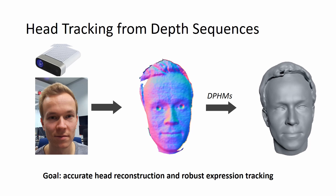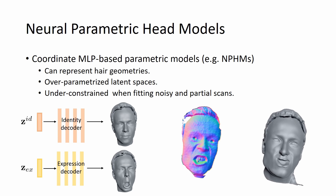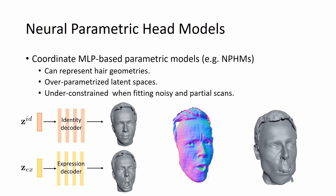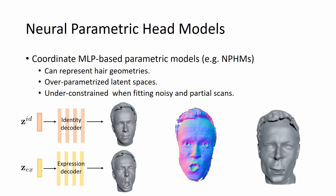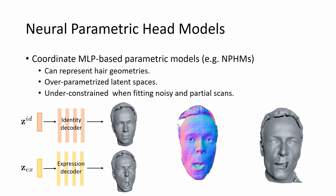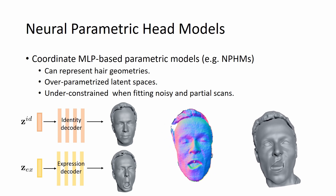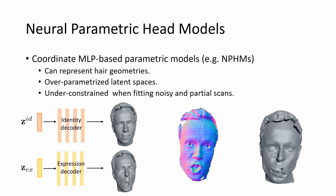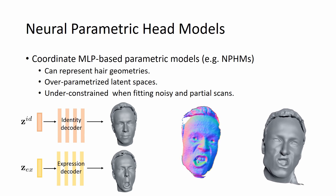State-of-the-art methods employ coordinate MLPs for expressive representations. For instance, MPHMs characterize the geometry of head avatars using disentangled latent spaces for identity and expression. This enables capture of fine details like hair, but also over-parametrizes the latent space, leading to under-constrained fitting to real-world noisy and partial scans.